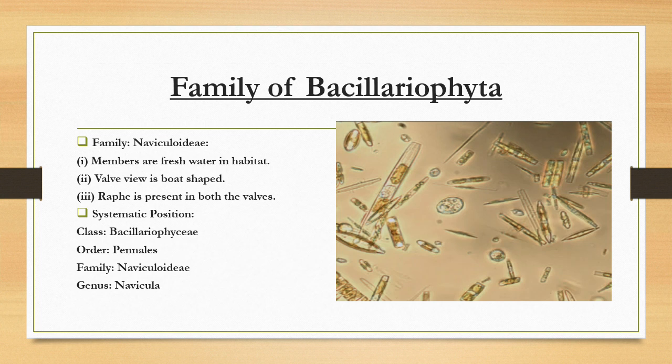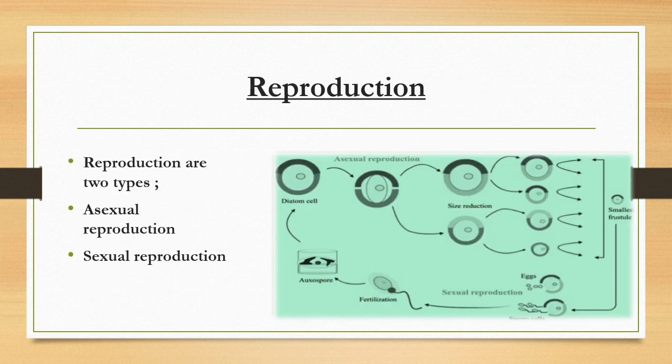Family of Bacillariophyta: Members are freshwater in habitat, the valve view is boat-shaped, and the raphe is present in both walls. The systematic position covers class, order, family, and genus.